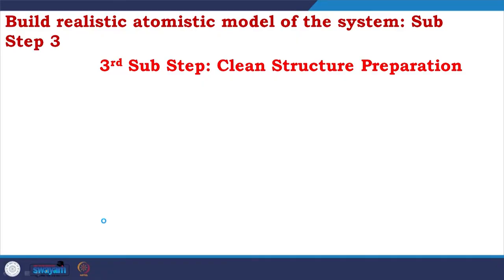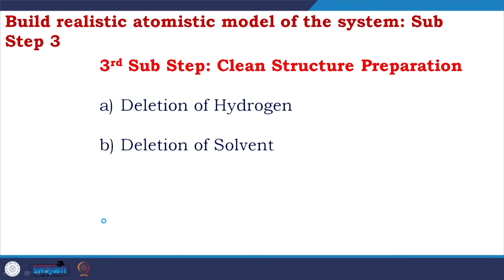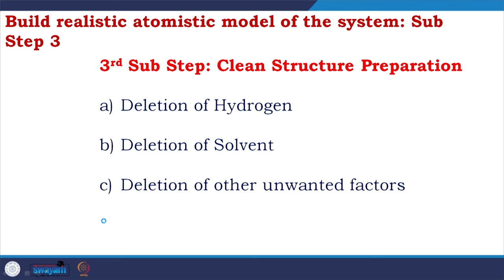The third step is structure cleaning: you delete hydrogens, delete solvents, and delete other artifacts coming from crystallography. You check and delete them. Now you have a clean dot PDB structure — a realistic atomistic model of the system ready to go for simulation.